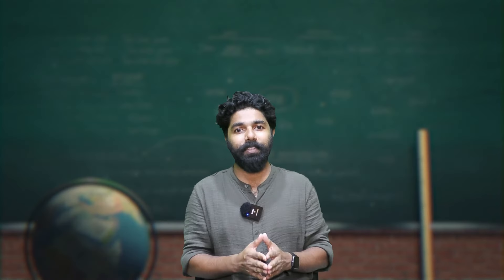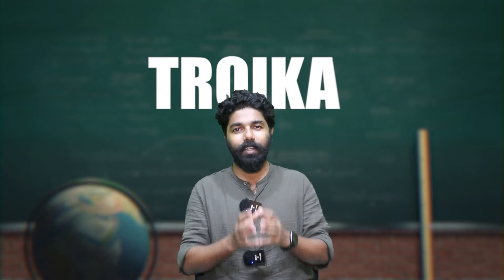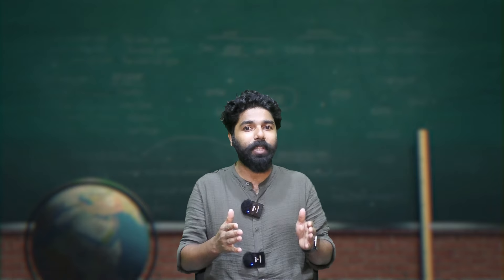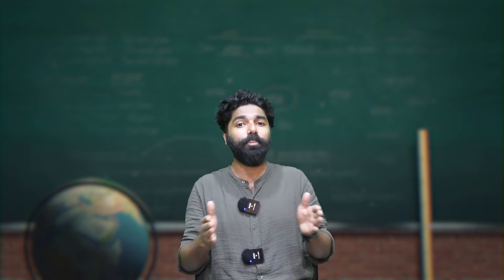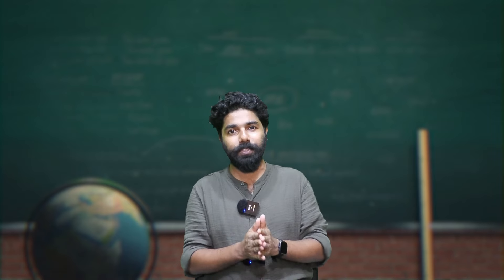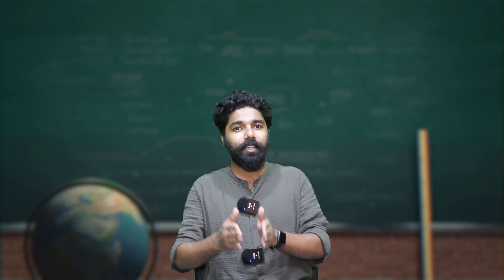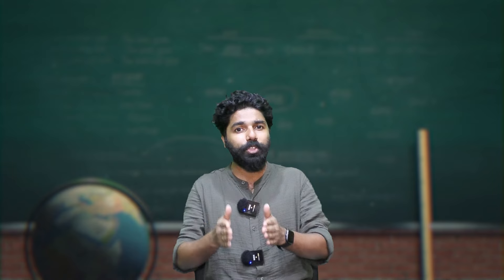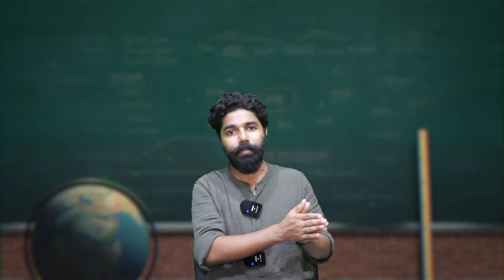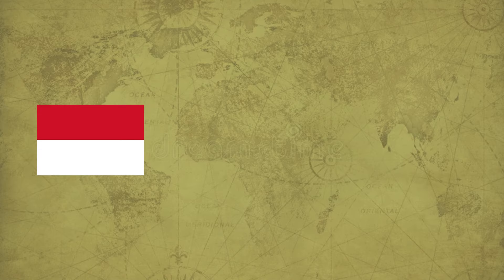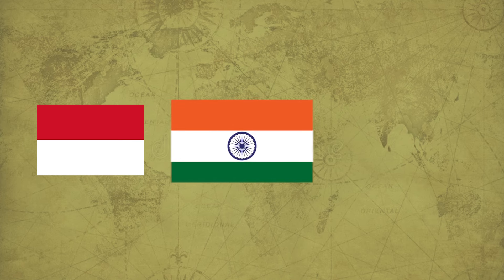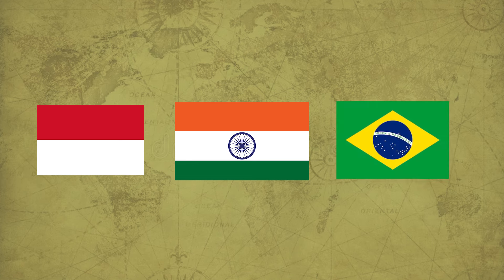Another important point with respect to G20 is the term Troika. What is Troika? Since G20 does not have any permanent secretary, the continuity of the policy is managed by the Troika group. The Troika group consists of the country that hosted the previous 2022 summit, which is Indonesia, the current presidency hosted by India, and the next presidency which will be held by Brazil. So the next summit will be held in Brazil.